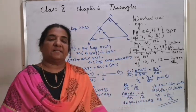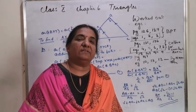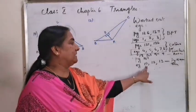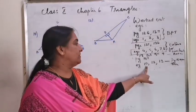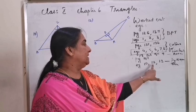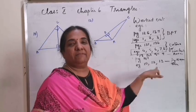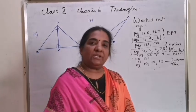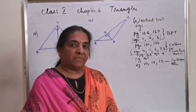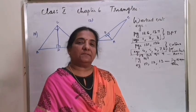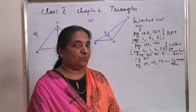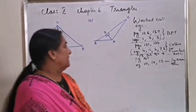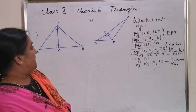The next worked out examples are based on Pythagoras theorem, page 147, questions 10, 12, and 13. Questions 11 and 14 are simple enough to do on your own — just compare equal parts and prove the given statements correctly.